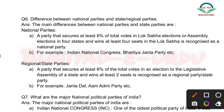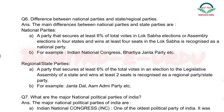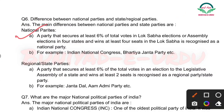Difference between national parties and regional/state parties: National parties — a party that secures at least six percent of total votes in Lok Sabha elections or assembly elections in four states, and wins at least four seats in the Lok Sabha, is recognized as a national party.